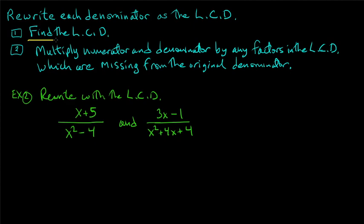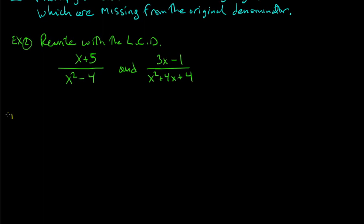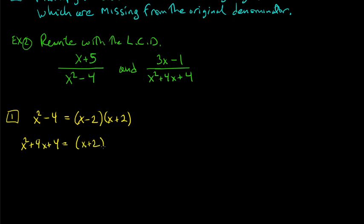Step one, find the LCD. Factor x squared − 4 as a difference of squares: (x−2)(x+2). Factor x squared + 4x + 4 as (x+2) squared. The LCD must include all factors using the largest exponents, so it's (x−2)(x+2) squared.